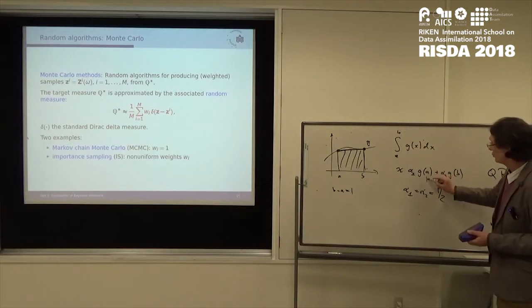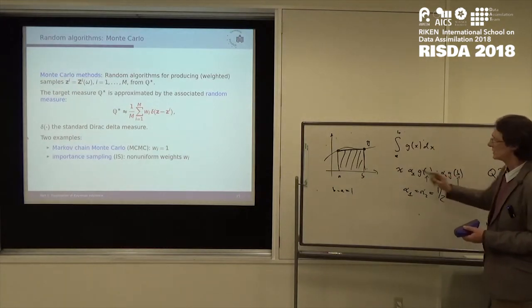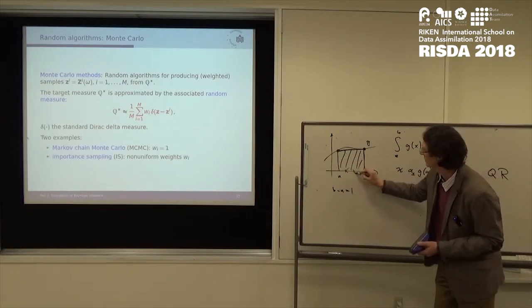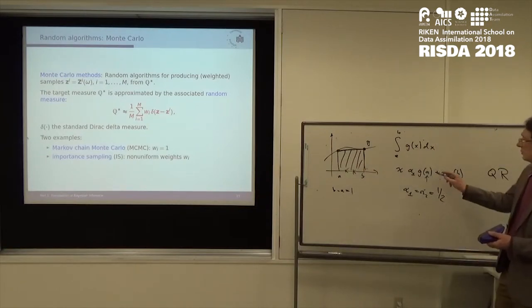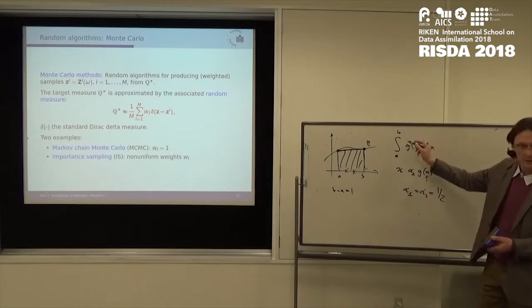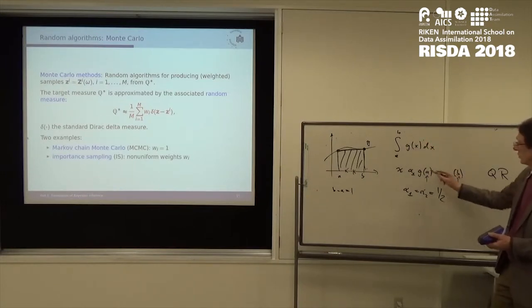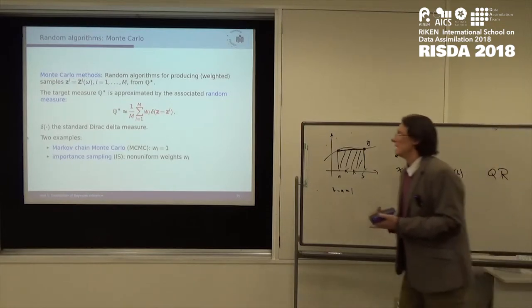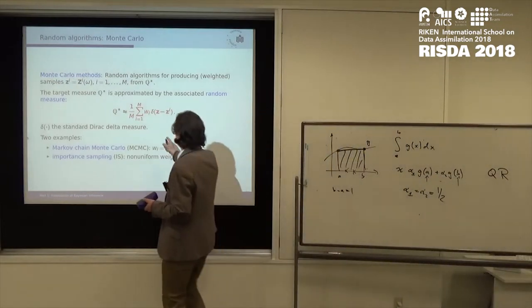So basically, you have to choose these two points here, and I chose them. But you could choose any other two points here, right? I could have taken those. And then to approximate an integral, I approximate by a sum, and so I have to give them weights.